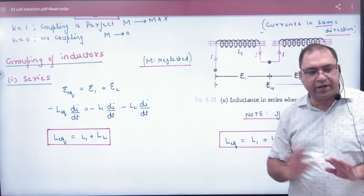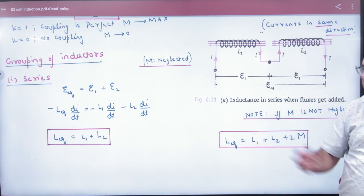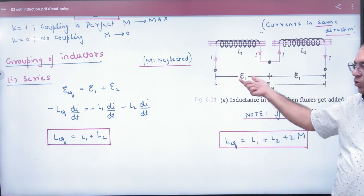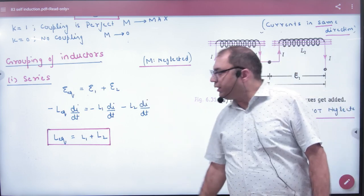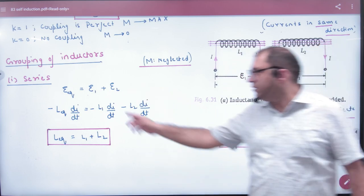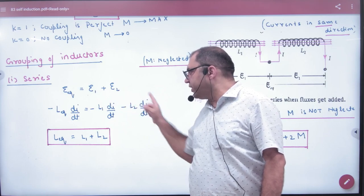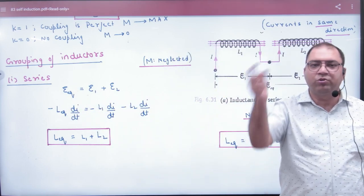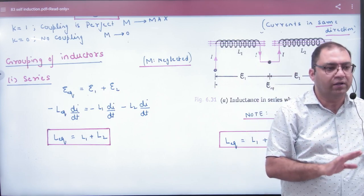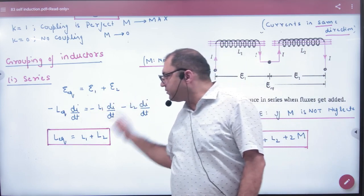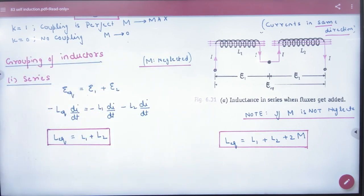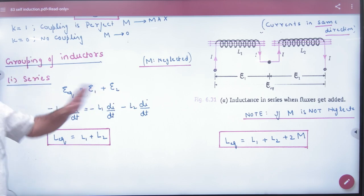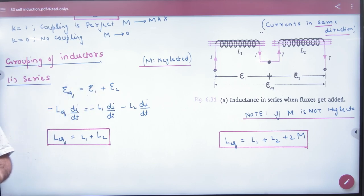I have to neglect the mutual induction. In series, the induced EMF will be equal to both. The induced EMF formula is: minus L1 di/dt, minus L2 di/dt, equals minus L_equivalent di/dt. Since di/dt is the same and cancels, the equivalent inductance is L1 plus L2.